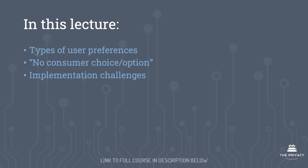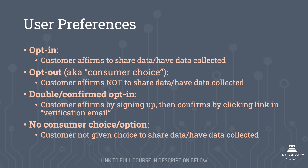This is part one of user preferences. In this lecture we're going to discuss types of user preferences, the no consumer choice or option, and implementation challenges. There are many different user preferences we're going to talk about: opt-in, opt-out, double or confirmed opt-in, and no consumer choice or no consumer option.